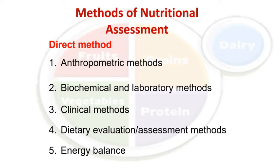Direct methods are commonly used in social sciences, sociology, anthropology, food and nutrition, and in public health. Community-based research is based on the direct methods. The list of direct methods includes anthropometric methods, biochemical and laboratory methods, clinical methods, dietary evaluation or assessment methods, and energy balance. We will see one by one all of these — what they are and how we can measure them.